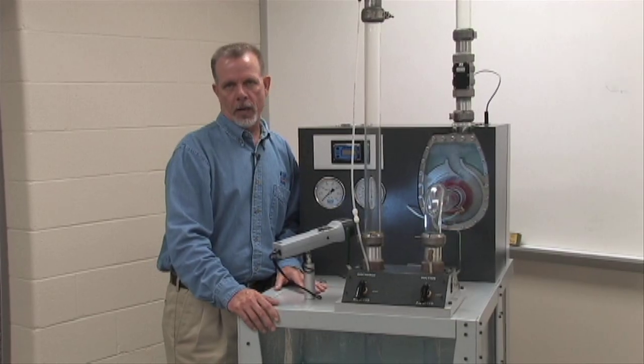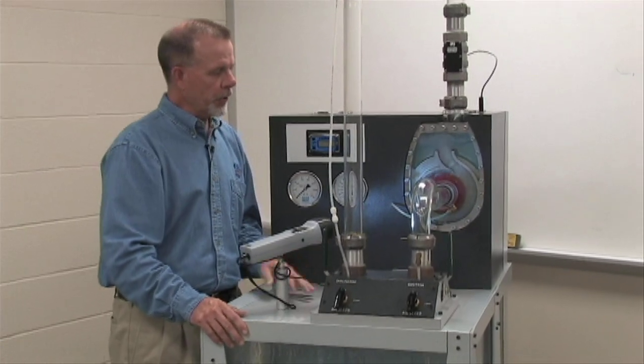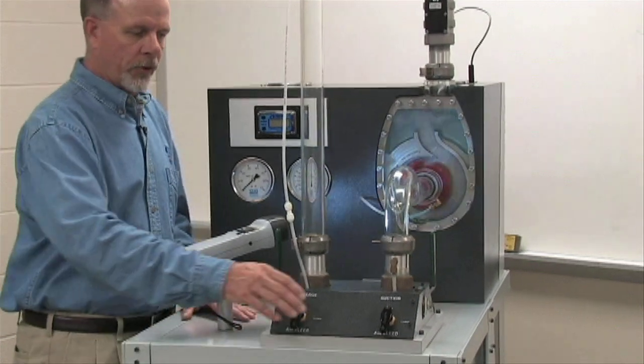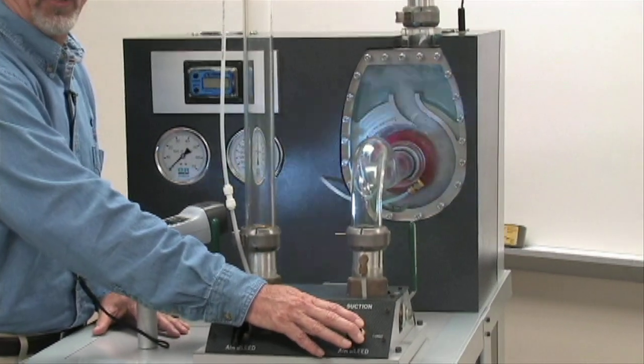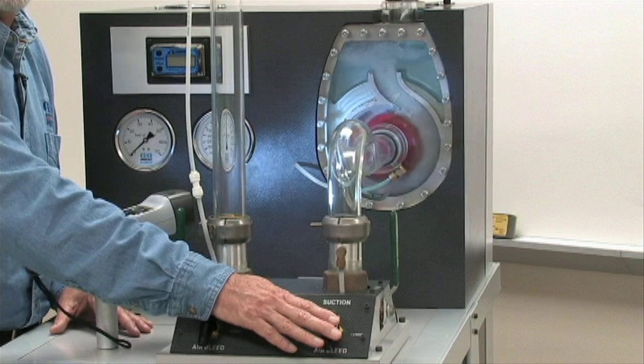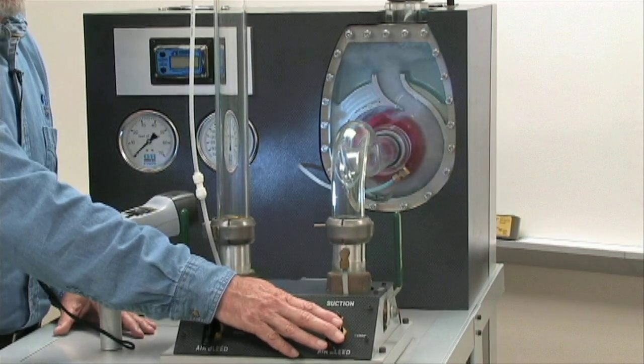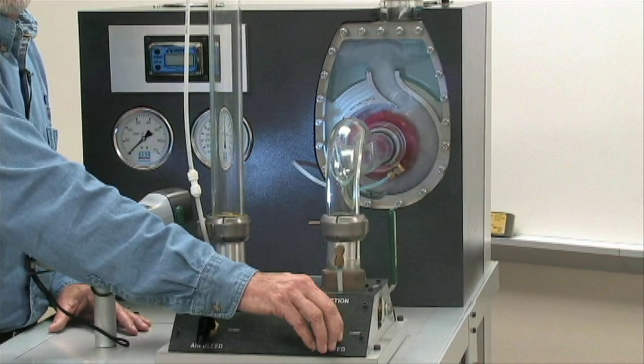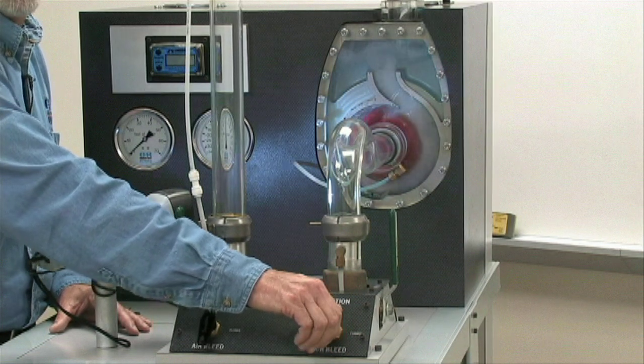One cause of failure to prime is an air leak. During the recirculation process, we have left open an air bleed valve allowing atmospheric pressure into the suction line, simulating an air leak. By closing this valve, we now have a suction line capable of pulling a vacuum.